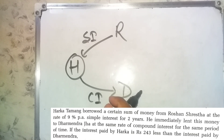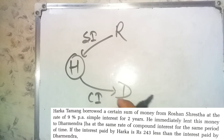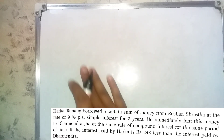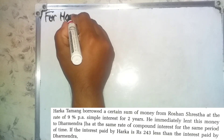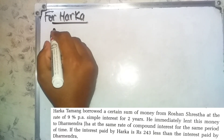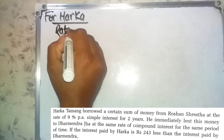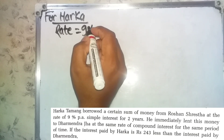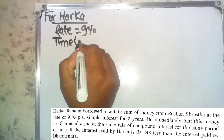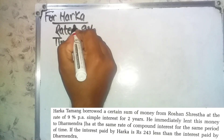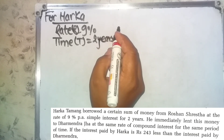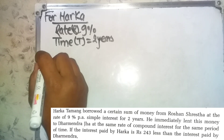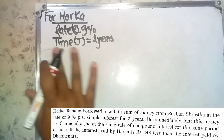If the interest paid by Arka is 243 less than the interest paid by Dharmendra Raj at the same rate of compound interest. Let's solve it. For Arka, the rate of interest is 9% and time is 2 years. So we can see that SI equation is set up.